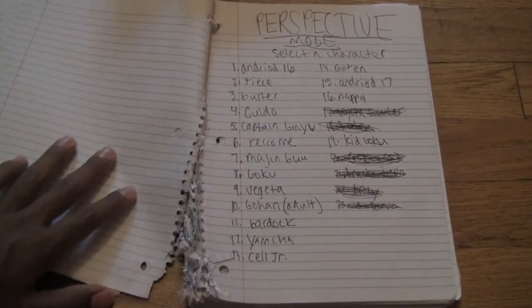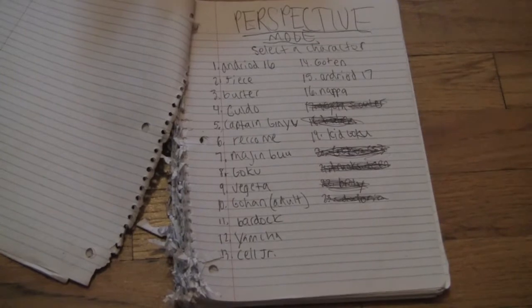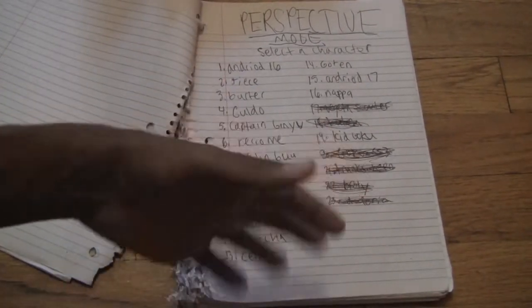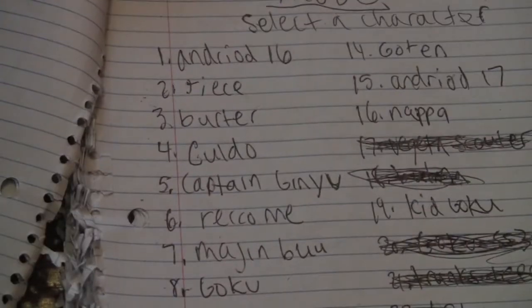But if we go to the perspective mode again, here's the perspective mode. This is like the story mode. You pick a character, and then you go through their battles. As you can see here, let's see the characters they have for you to pick from.